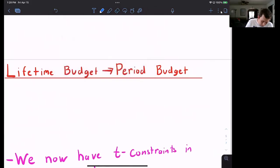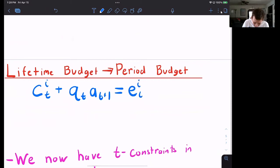So the consumer chooses to eat a number of coconuts. So we'll call that C_t^i. Then he can choose to buy a number of coconuts for tomorrow, number of assets. So that's going to be Q_t times A_t+1.